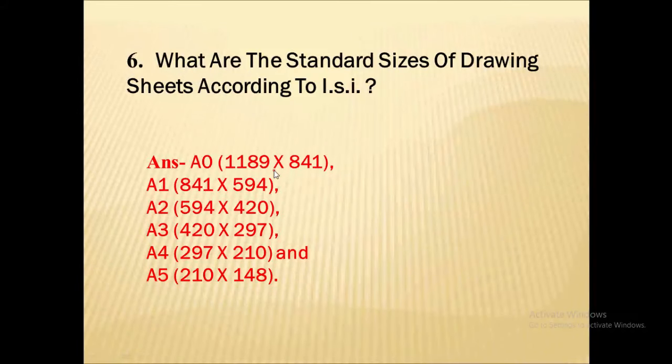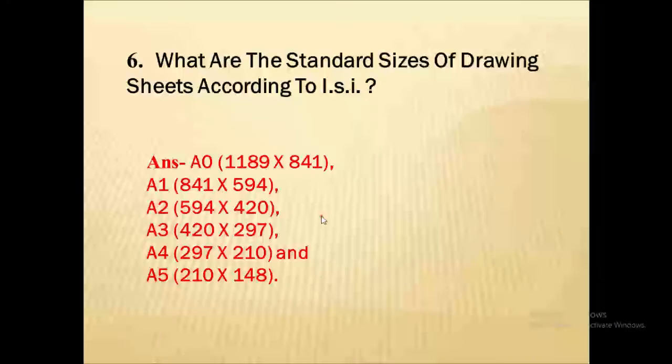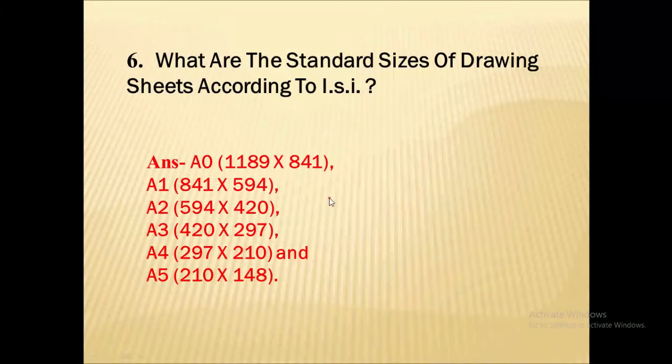A0 size is 1189 by 841. A1 size is 841 by 594. A2 size is 594 by 420. A3 size is 420 by 297. A4 size is 297 by 210. And A5 size is 210 by 148. So these are the standard drawing sheets that are available. This is also a very important question. From these drawing sheets, A3 and A4 size drawing sheets are mostly used in industries.